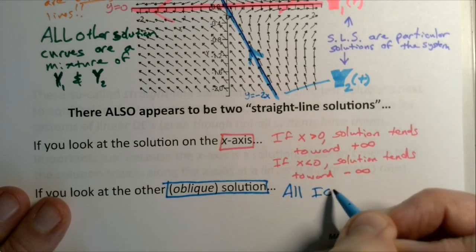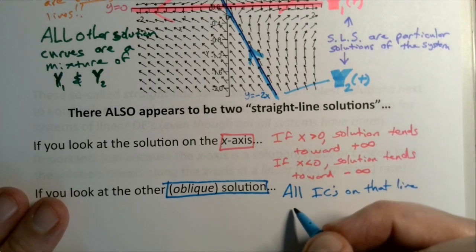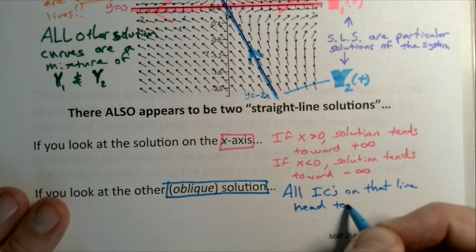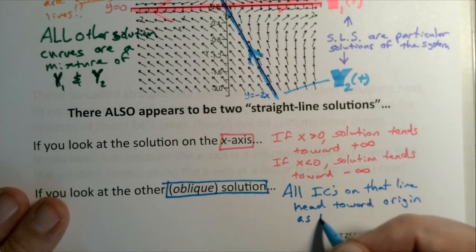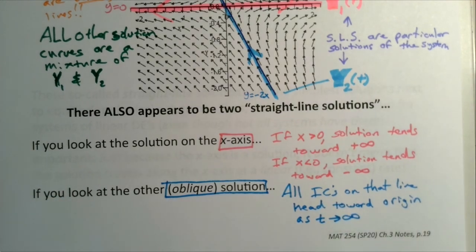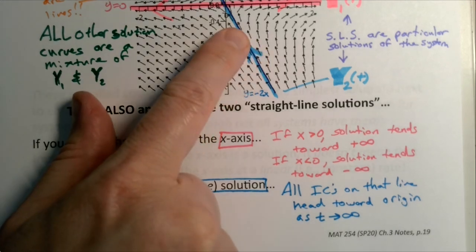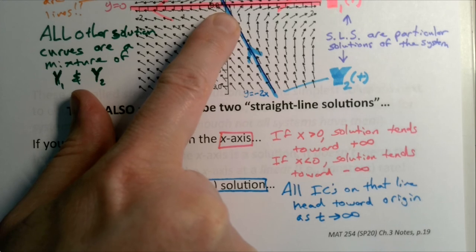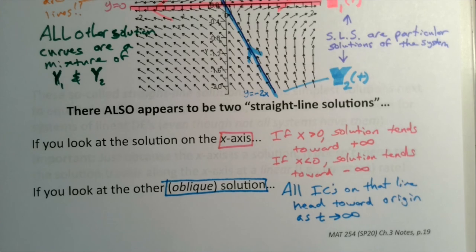So no matter what. Now, I should say, the initial conditions don't approach the origin. The initial conditions are just the starting point. But if you start here, if you start here, if you start there, it doesn't matter. As soon as you play the clock forward, your solution curve is going to go and head towards the origin.